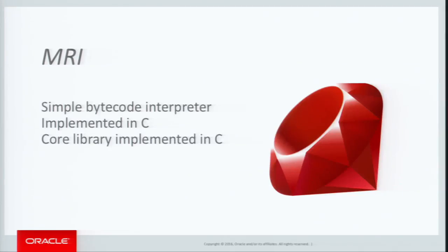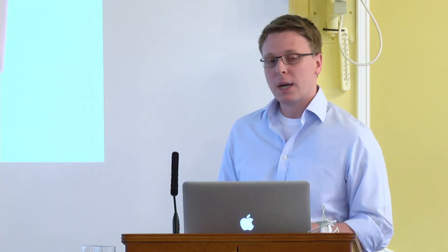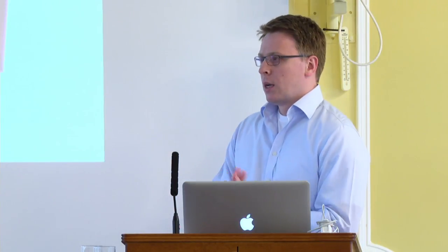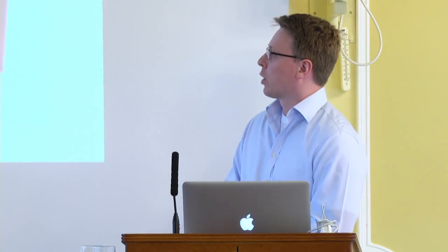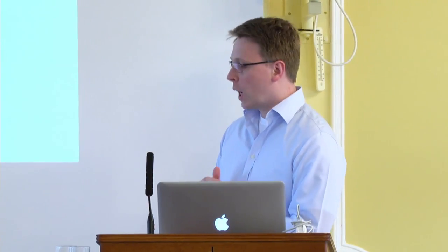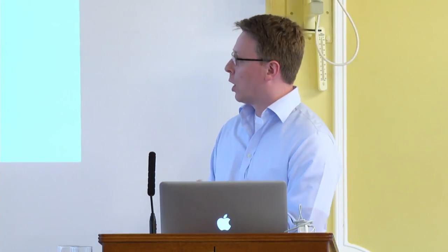Ruby is quite unusual in that there have been quite a few historically good implementations. Other languages like Python or Lua generally have one main implementation, but Ruby has had many. The main one is called MRI — Matz's Ruby Interpreter — named after Ruby's creator. It's a very simple bytecode interpreter; it used to be an AST interpreter in C, and only in the last six or seven years became a bytecode interpreter. The core library, almost all the built-in stuff, is implemented in C — one C function per Ruby method.